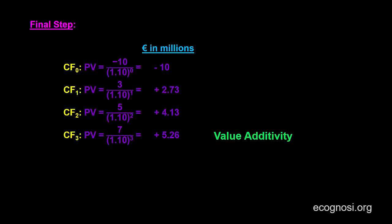And we can do so because they are at the same point in time. We transferred everything in present value terms in this case. So minus 10 plus 2.73 plus 4.30 plus 5.26 gives us 2.12. And this 2.12 million euros is the value of the project. What we are saying over here is that if a firm undertakes this project, then it will increase its value by 2.12 million euros. And this value in finance is called the net present value or NPV of the project.